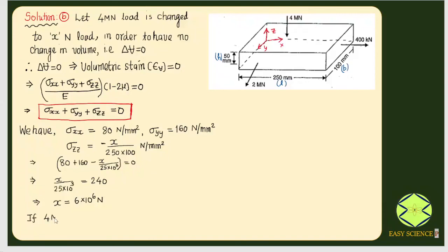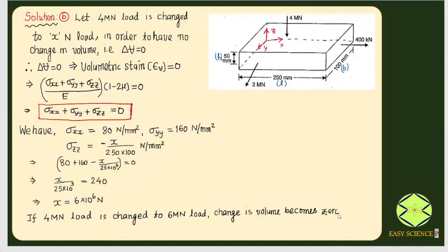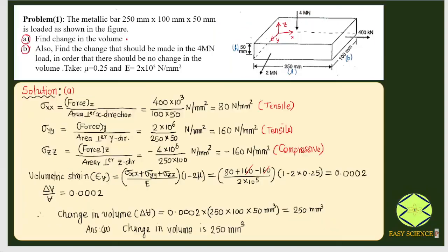Therefore, if the 4 MN load is changed to 6 MN load, the change in volume is zero — there is no change in volume. This is the answer for part B. Part 1 gives us the idea to find volumetric strain and volume deformation when forces are acting on a member. You can try a few more problems for better hands-on experience. Thank you very much.